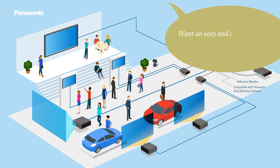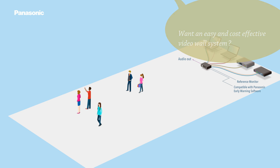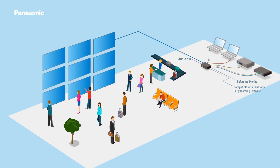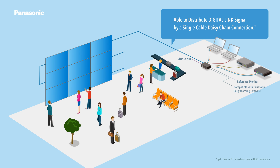Want an easy and cost-effective video wall system? You're able to distribute the digital link signal by a single cable daisy-chain connection.